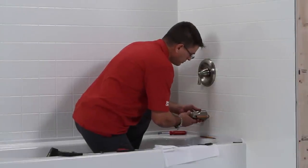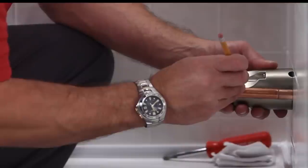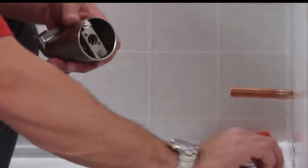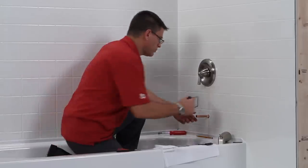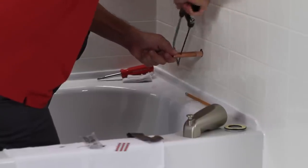After the epoxy is cured, use the hash mark on the bottom of the spout to determine the proper length. If it is too long, mark the tube and cut off the excess tube with a hacksaw or copper tube cutter.